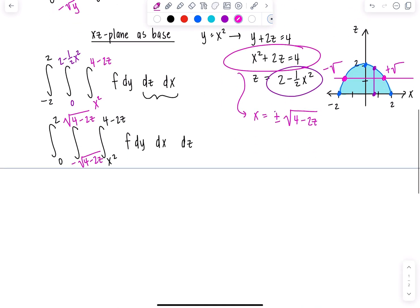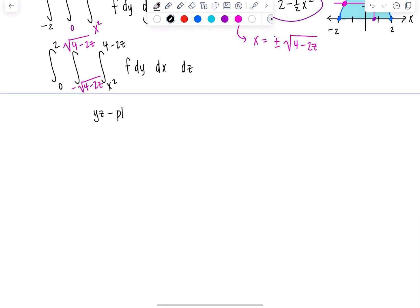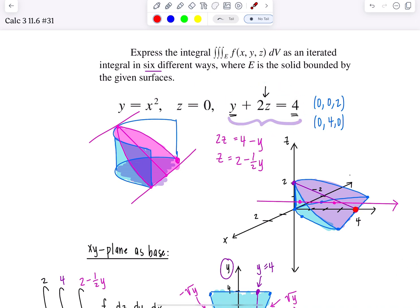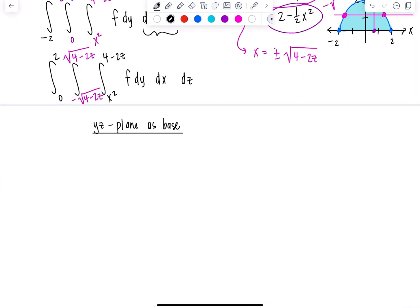Last one. We've done XY plane, XZ plane, so we need to do YZ plane as the base. And this one's a little easier actually. X equals zero. If we're using the YZ plane as the base, we're going to be looking at a triangle in the YZ plane. We're just going to have this sweet little triangle. I'm going to graph Y plus two Z equals four. I'll keep the Z axis going up so it coincides with our 3D graph. Here's Y, here's two, one two three four. This is Y plus two Z equals four, and we're shading all of this.